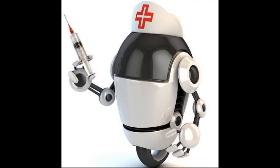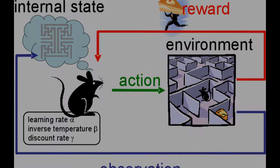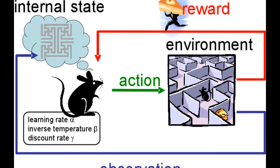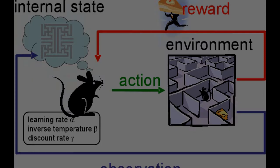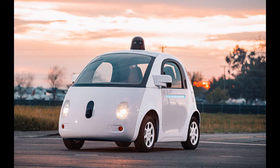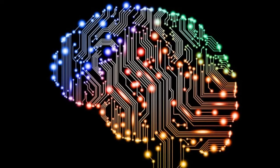Google's AlphaGo program was able to beat a world champion in the strategy game Go using deep reinforcement learning. Machine learning is even being used to program self-driving cars, which is going to change the automotive industry forever. Imagine a world with drastically reduced car accidents simply by removing the element of human error. Google famously announced that they are now machine learning first, and many other companies like Nvidia are following suit.